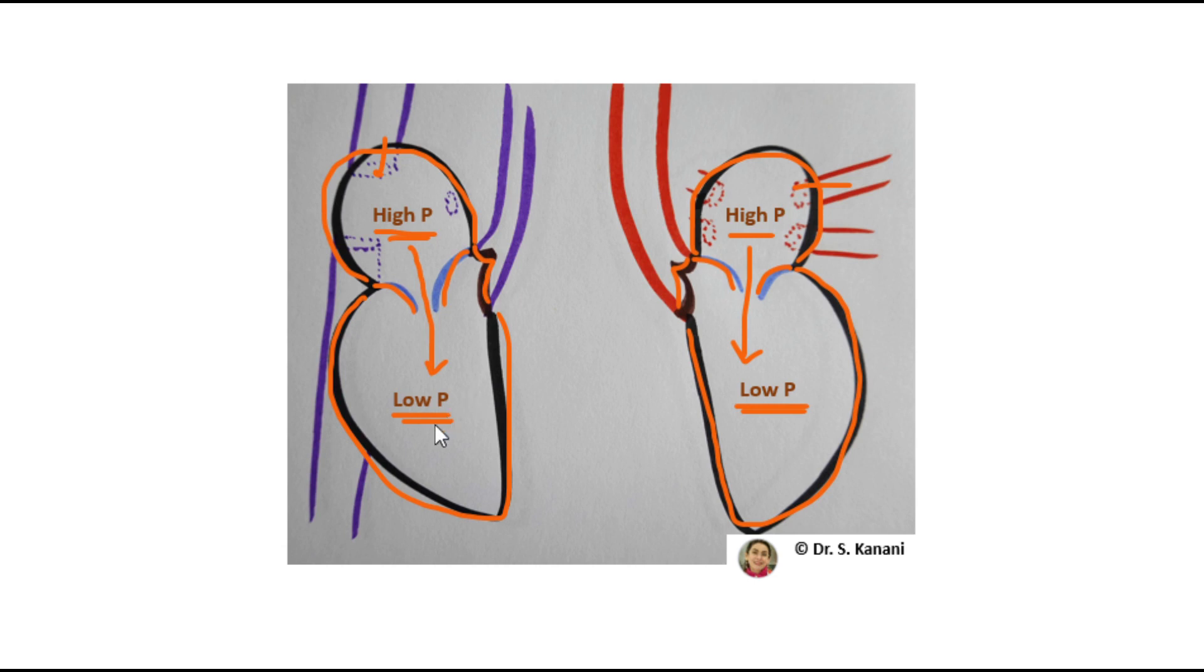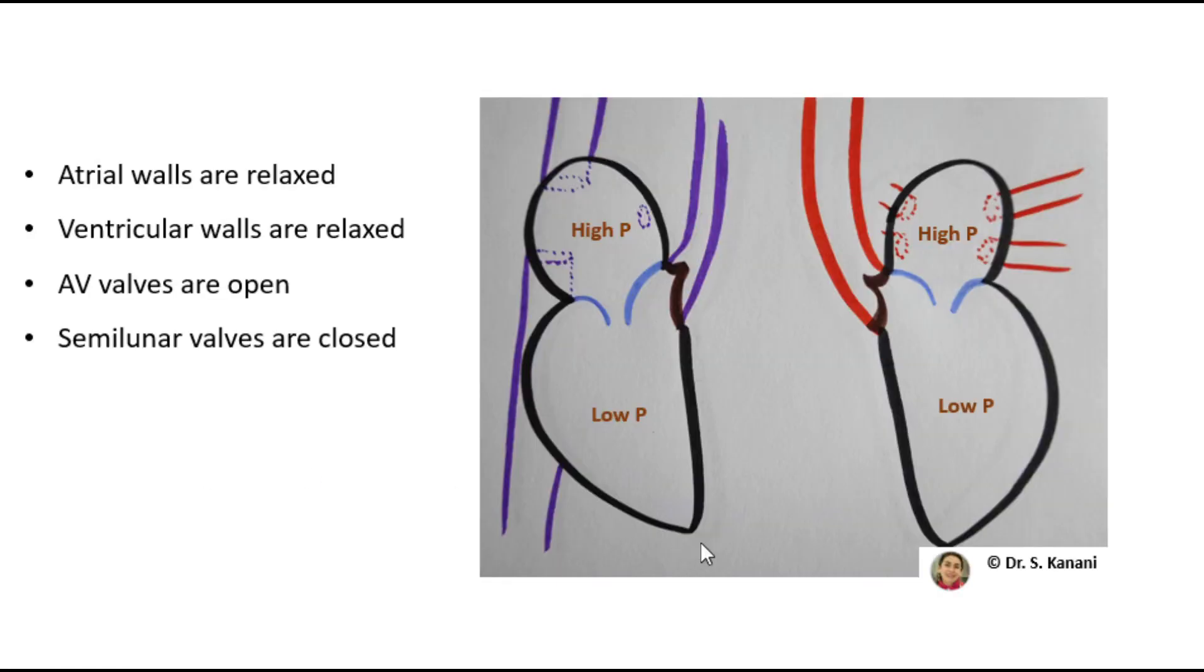We know when ventricles are receiving blood, they cannot simultaneously pump blood out. So in short, during ventricular filling, ventricles receive most of the blood that they need from atria, from high to low pressure, and the entire heart stays relaxed. Atrial walls and ventricular walls are all relaxed, the entrance into the ventricles, AV valves, are open, but the exit out of the ventricles, semilunar valves, are closed.